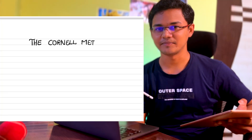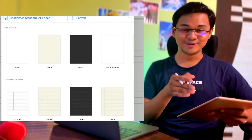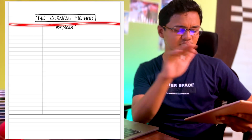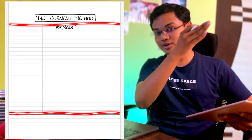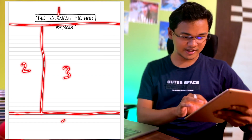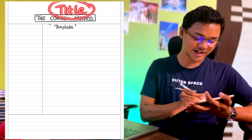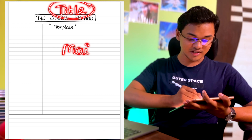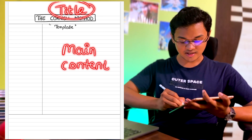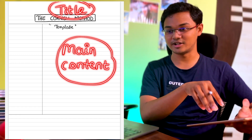The next method is the Cornell method — one of the most popular methods of note-taking. GoodNotes itself has a template for it. You draw one horizontal line above, one horizontal line below, and one vertical line in the margin, dividing your page into four boxes. The upper box is for the title, and the center box is where you write the main content — the full substance of your information.